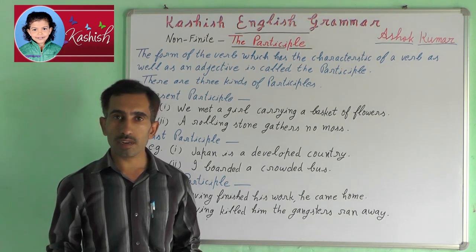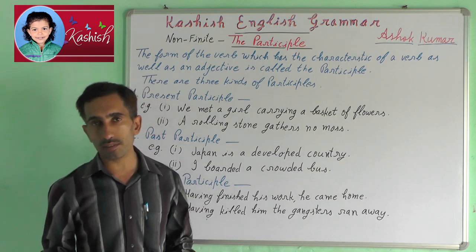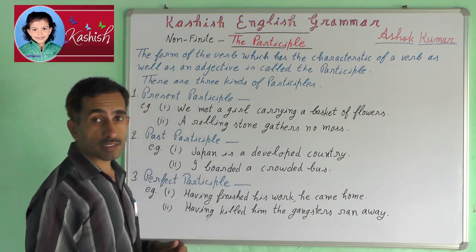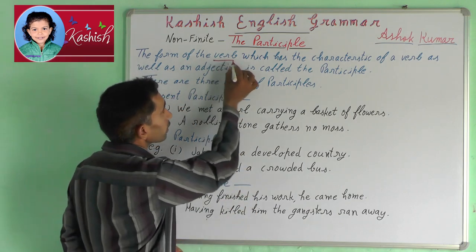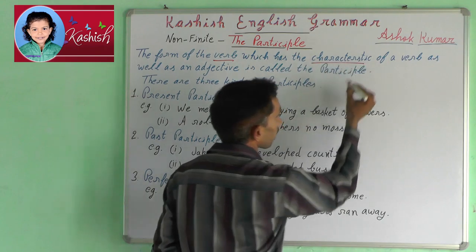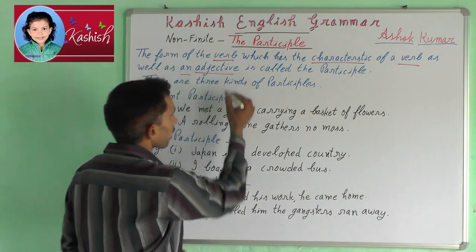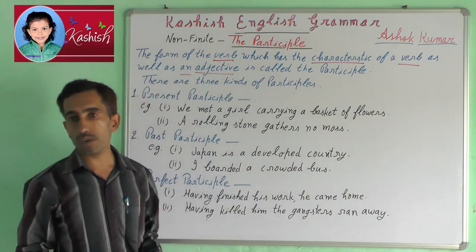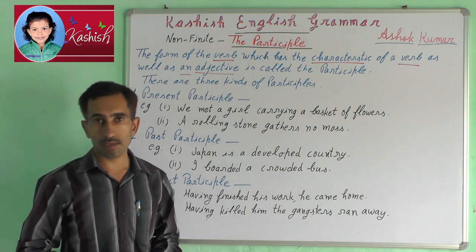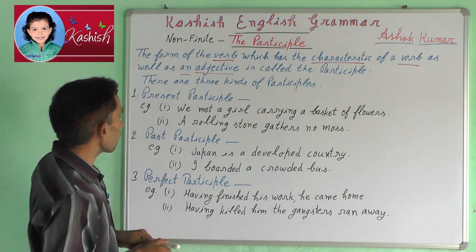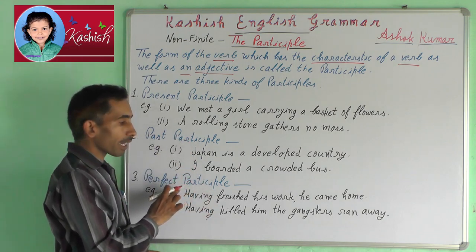Welcome to Kashi's English grammar lesson. Now we will learn about the participle. What is the participle? The form of the verb which has the characteristic of a verb as well as an adjective is called a participle. There are three types of participle: present participle, past participle, and perfect participle.